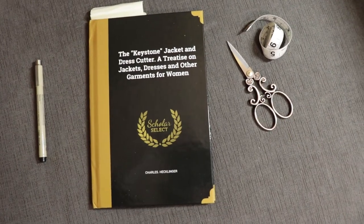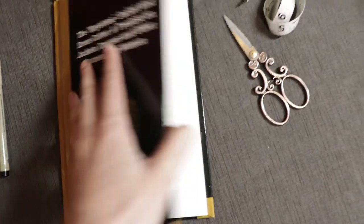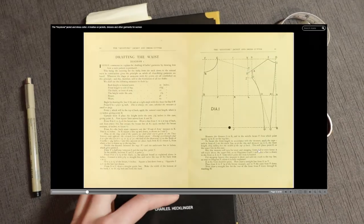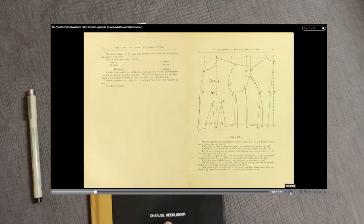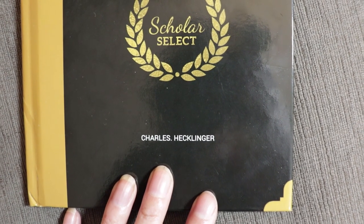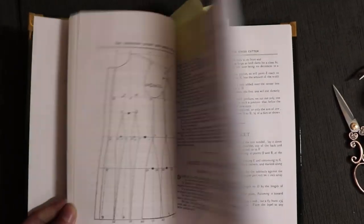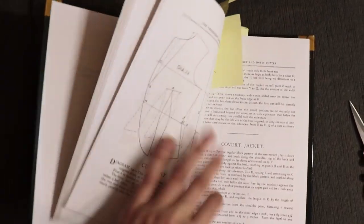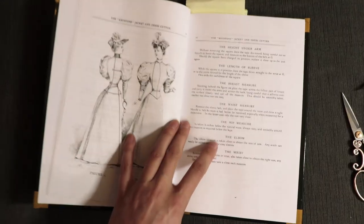Before I can just make a jacket, I need a pattern. And so for that I got this book. This is actually available online for free. I'll put a link in the description. It is the Keystone Jacket and Dress Cutter by Charles Hecklinger. This book was published in 1895. And it's basically all information on everything you could possibly want to make in terms of jackets and dresses and stuff from the era.